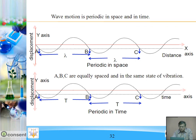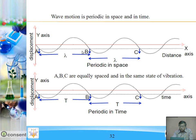Wave motion is periodic in space. Points A, B and C start vibrating in the downward direction. A point in the opposite direction is not in phase with them. But A, B, C are equidistant from each other and start vibrating in the downward direction — they are in the same phase. The distance between two consecutive points in the same phase is known as wavelength, that is lambda. Therefore, wave motion is periodic in space as well as in time.